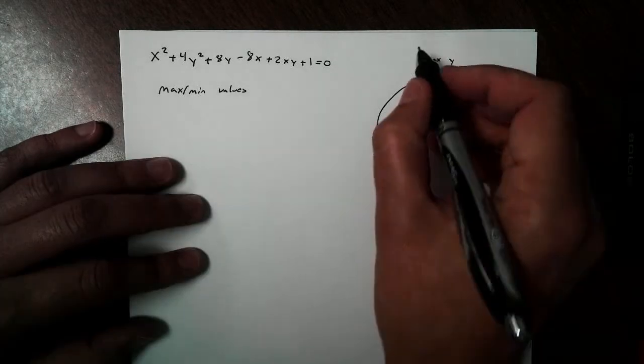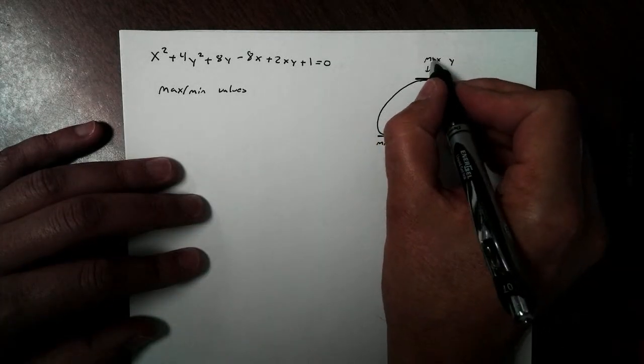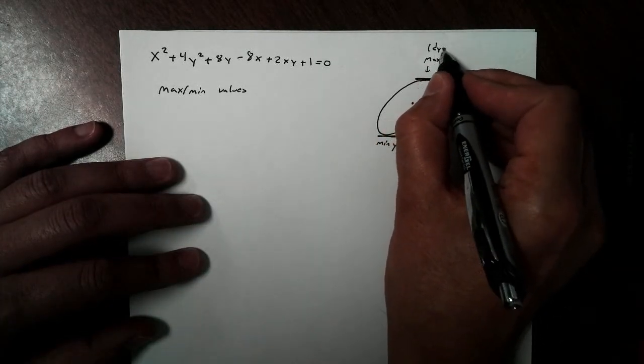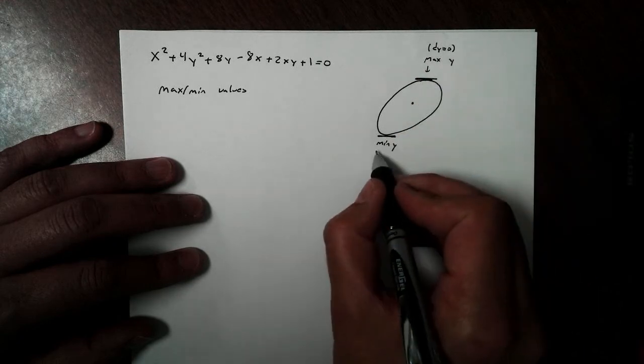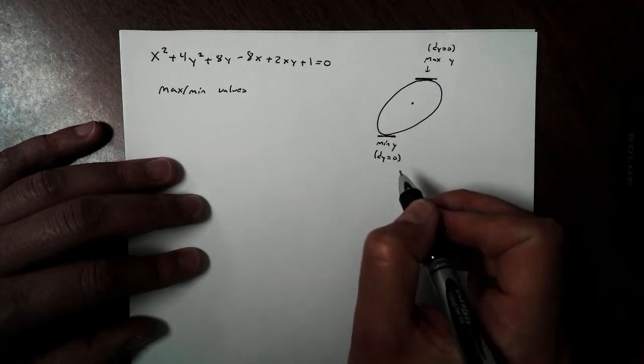Well, we know from experience that this is where dy would equal 0. And in the minimum, the change in y values would equal 0.